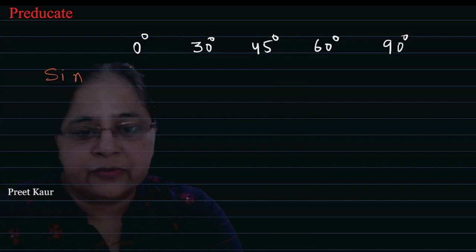Sine values: 0, 30, 45, 60, and 90. Sine 0 degree is 0 value. Sine 30 is 1 upon 2.